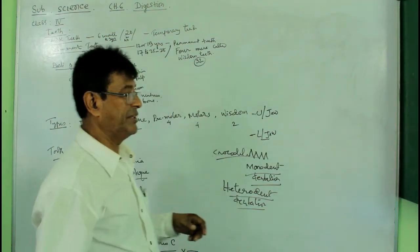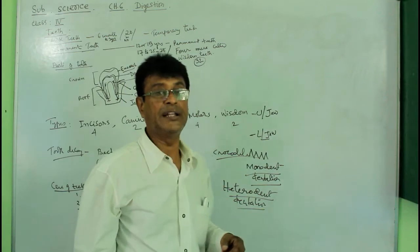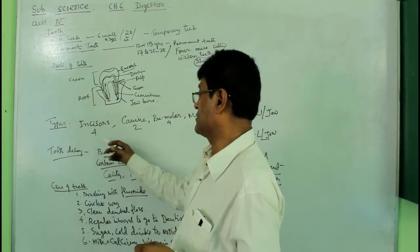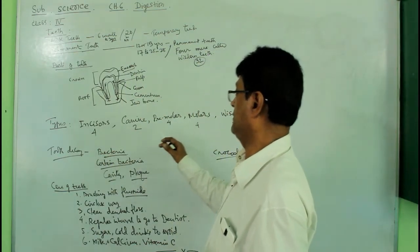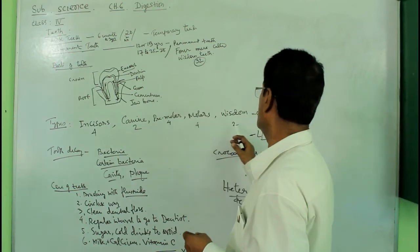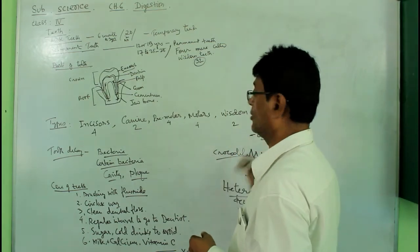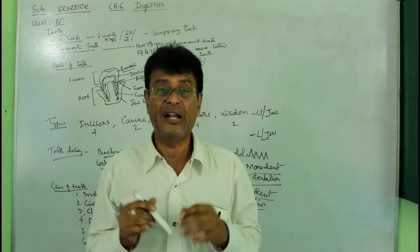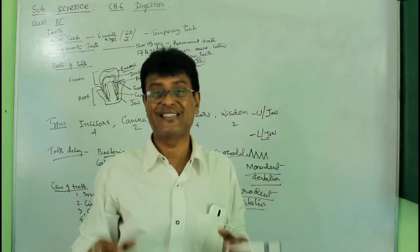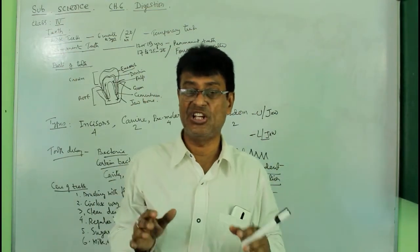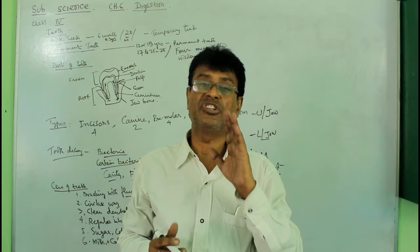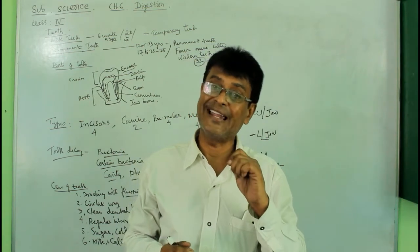So we have four kinds of teeth: incisors for cutting, canines for tearing and holding, pre-molars for crushing, and molars for grinding, along with wisdom teeth. The lower jaw and upper jaw each have sixteen teeth, combining to form thirty-two permanent teeth in a complete human dental set.